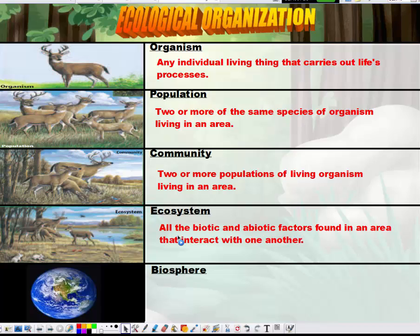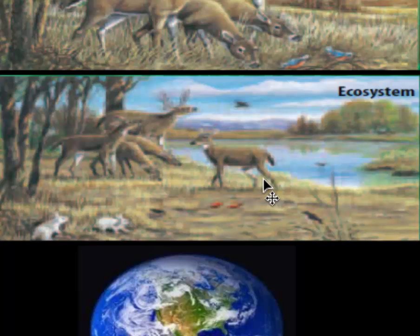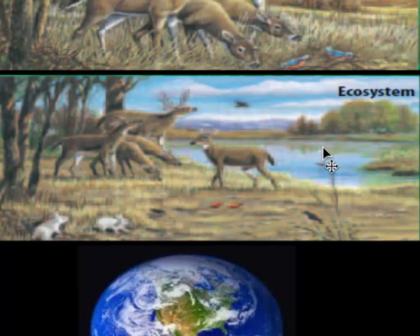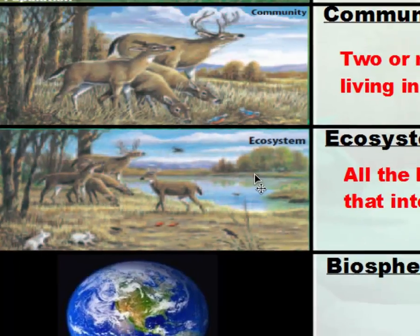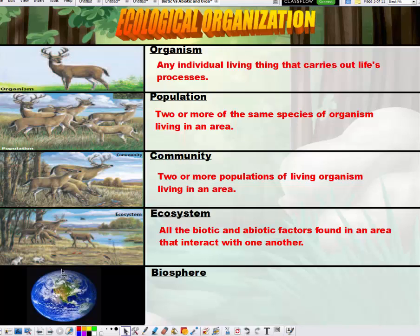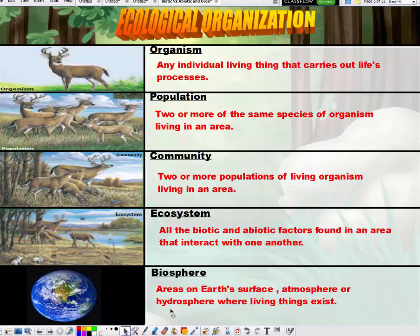Next we have an ecosystem, which is essentially all the biotic or living things and all the abiotic or non-living things found in an area that interact with one another. So we have populations of deer, rabbits, birds, grasses, trees, and other plant life as the biotic factors, while abiotic factors include water in clouds or a pond, air, sun, soil, and rocks. Finally, the biosphere encompasses the earth — specifically the areas on earth's surface, the atmosphere, and the hydrosphere where living things exist. The land has living things, the ocean has living things, and they both make up the biosphere.